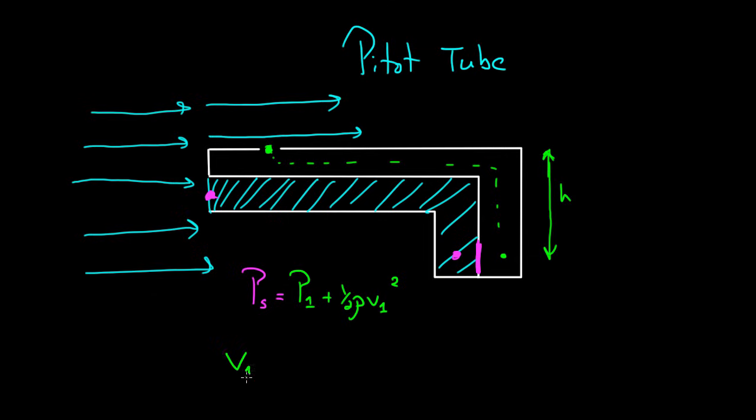I get that V₁ equals the stagnation pressure PS minus the pressure at one, that whole thing, times two divided by the density of the air, and then a square root, because you have to solve for the V₁.